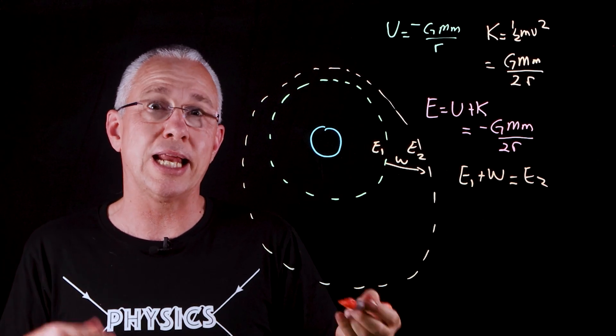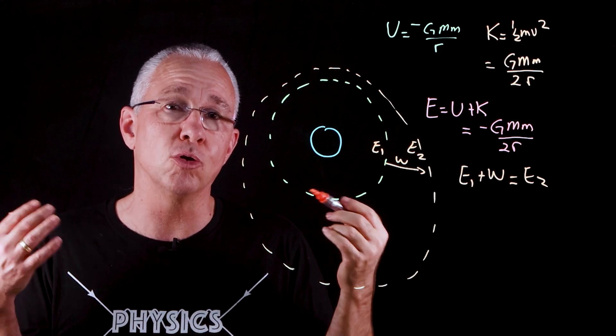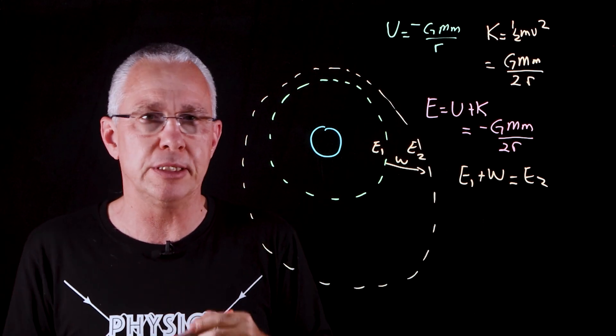So you now are able to work out how much work is done by simply comparing the two energies of the orbit after and the orbit before.